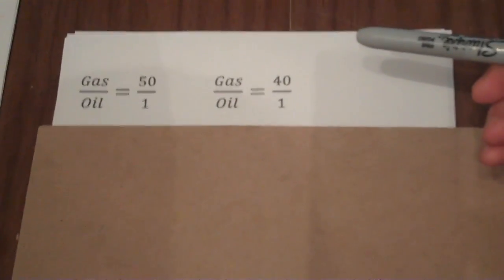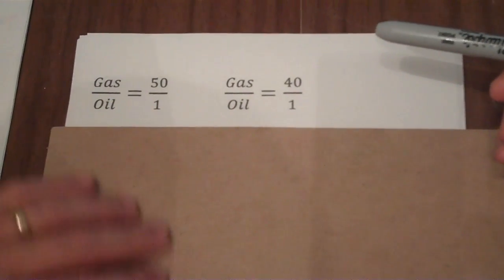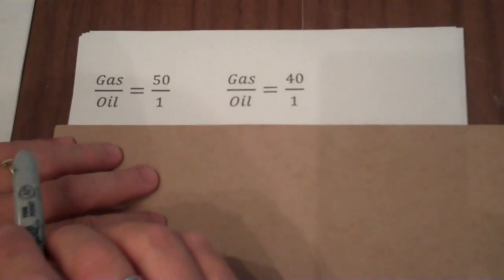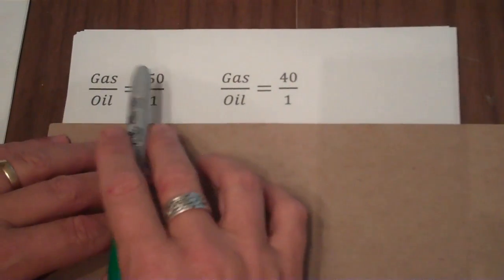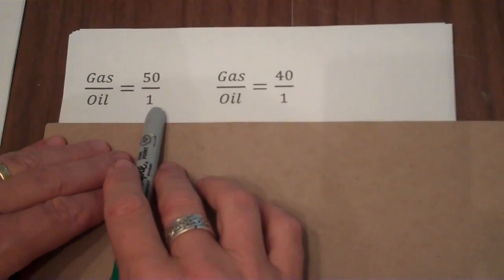This is problem number 4 from Linear Applications 2. The gist of the problem was that you had 5 gallons of gas that was already mixed in a 50 to 1 ratio of gas to oil.